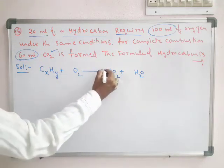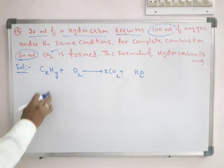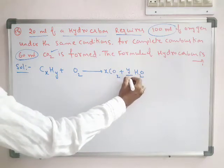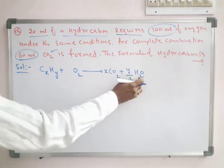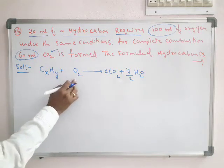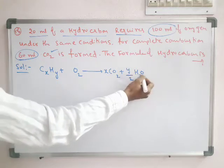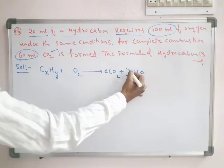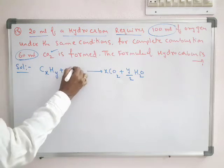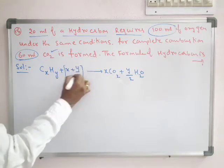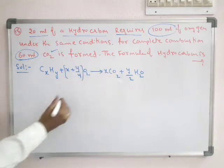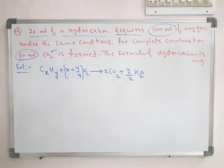Now we balance the equation: X gives CO₂, and Y hydrogen means Y/2 molecules of H₂. So Y/2 gives H₂O. For oxygens, we need X O₂'s from CO₂ and Y/2 O₂'s from H₂O. Writing this in terms of X and Y, we get X + Y/4 moles of O₂. So the general formula for hydrocarbon combustion is: CₓHᵧ + (x + y/4)O₂ → xCO₂ + (y/2)H₂O.